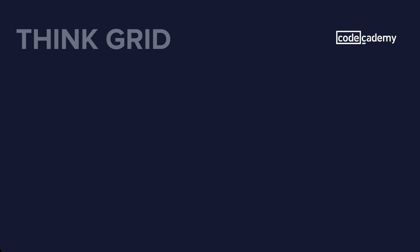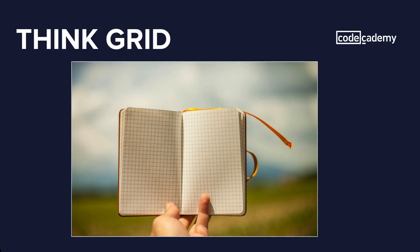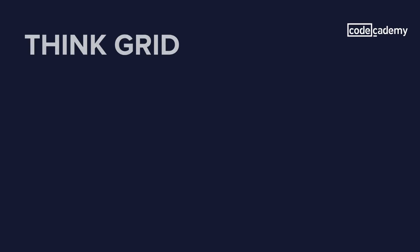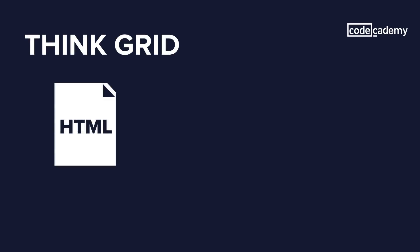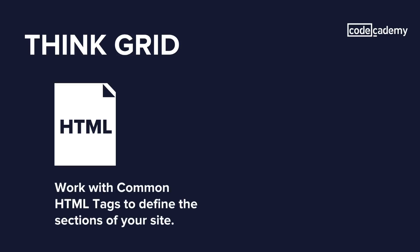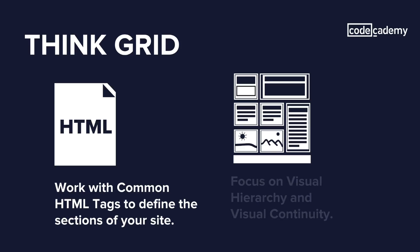When we begin to build our websites, let's think about their underlying structure as being grids. The design of our websites as we build them out in HTML and CSS are informed by a grid — be it the header region, a nav section, a main banner, a footer. As we think grid, let's work with common HTML tags to define the sections of our site, focusing on visual hierarchy and visual continuity as we move through the different sections.